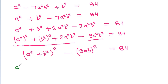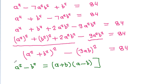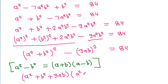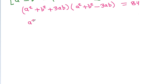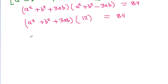We know that a² - b² = (a + b)(a - b), so this factors as (a² + b² - 3ab)(a² + b² + 3ab) = 84. Since a² - 3ab - b² = 12 is given, we get a² + b² - 3ab = 84 ÷ 12 = 7.